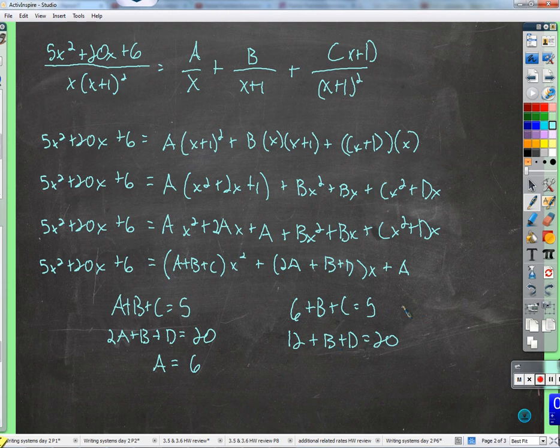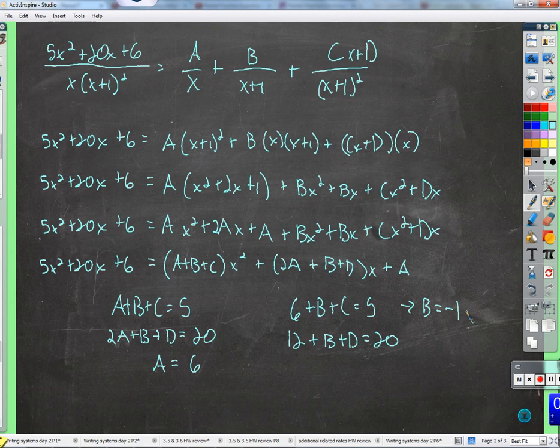As long as, in this case, b is equal to negative 1 minus c, we have solutions, right? As long as b is whatever c is, you take negative 1 minus c, and that's what b is. And so maybe you can throw c's in there.